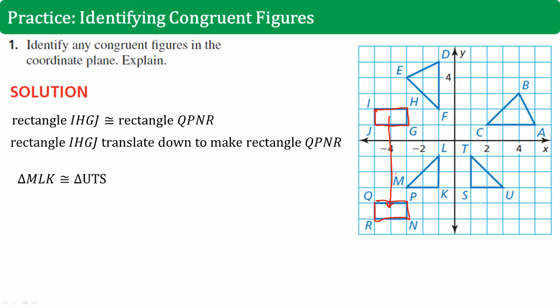We also say triangle MLK is congruent to UTS by, it looks like it was flipped. And that is through the Y-axis.